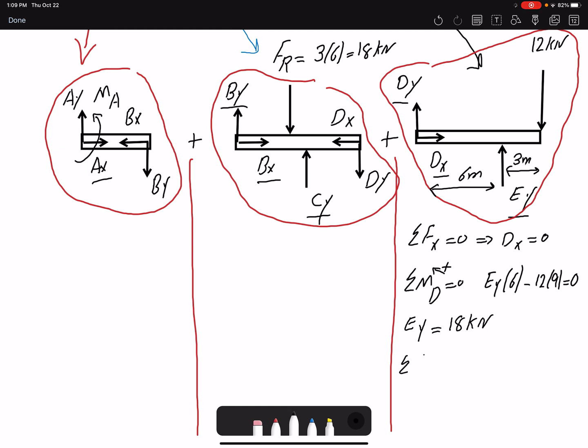And if I write summation of forces in Y equals zero, I can find DY. I have DY, I have 18, and I have negative 12. So DY would be negative 6 kN. Because it's negative, that means the direction I assumed is incorrect, but I'm not going to go and change my free-body diagrams. Now that we found DY and DX, so we have these two information moving forward to the next free-body diagram.